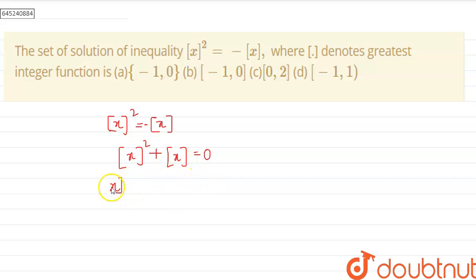Now what we can do is we can take gif of x common. So this will give us gif of x times gif of x plus 1, this is equal to 0.